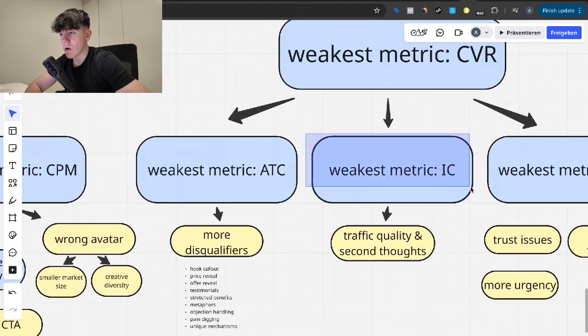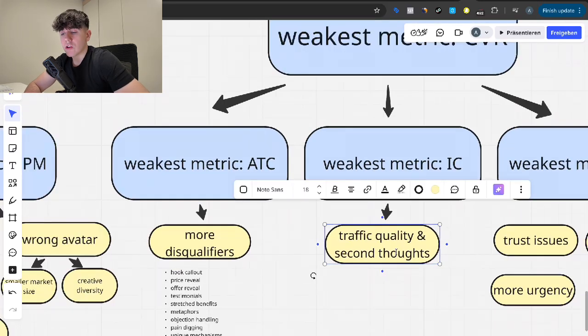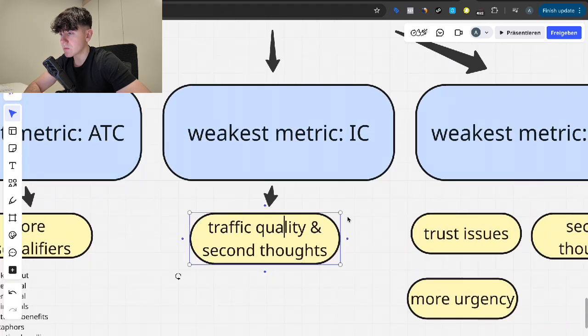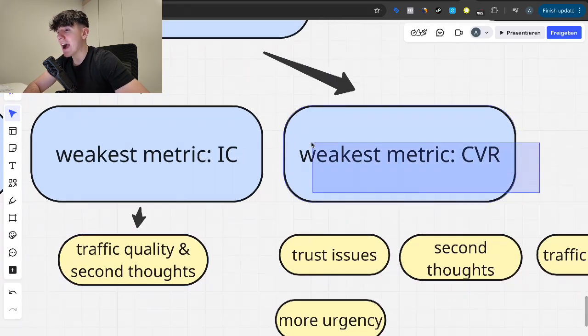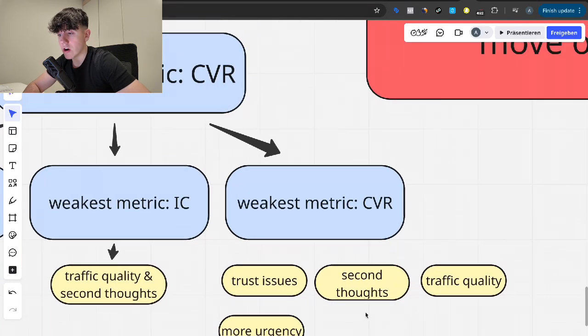So if your weakest metric right now is the initiate checkout, then I assume that it's going to be a traffic quality issue and people have second thoughts. And then what you do essentially from this is you literally just ask yourself, have I done this stuff before? Is it ad fatigue? Very hard to iterate your way out of ad fatigue, by the way, I would just kill the concept immediately. And if it's second thoughts, then you just have to add more urgency. Pretty much the same thing. Whenever the actual drop-off to the conversion rate is bad, people have trust issues, second thoughts, traffic quality, and you need to add in more urgency.